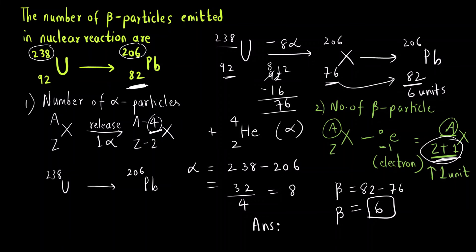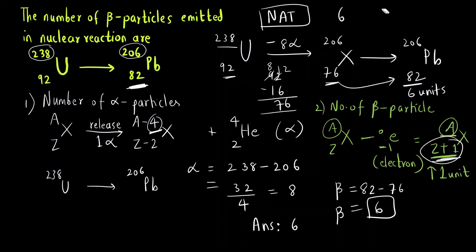So the correct answer is 6. This is a NAT type question, so you have to enter exactly 6. If you put any other answer like 5 or 6.1 or any other value, you will not get the credit for this 2-mark question. In the answer key it is written as 6 to 6, meaning you must enter the value as 6.